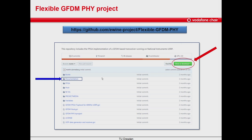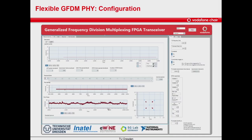Once the code is extracted, we can open the project with LabVIEW Communications Design Suite. Afterwards, we will open the GFDM host VI. This is the host VI — it is the user interface and it allows us to configure the parameters of the transceiver.